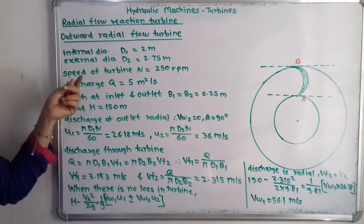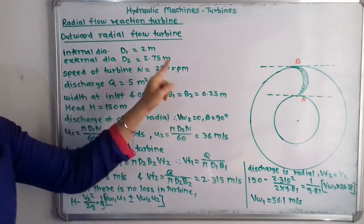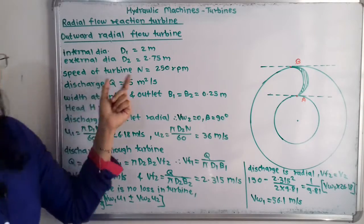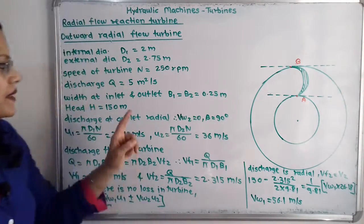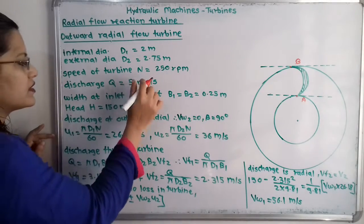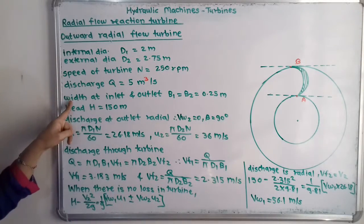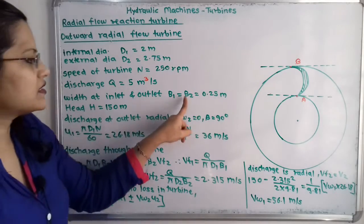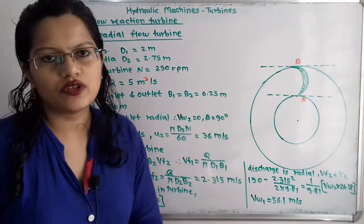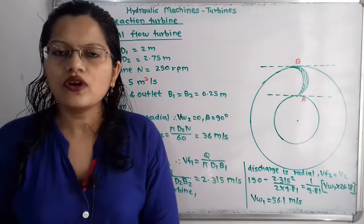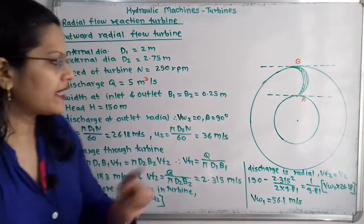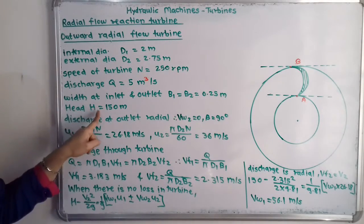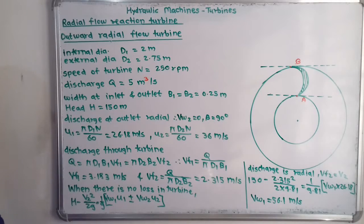Speed of the turbine N is given as 250 rpm, and the discharge Q is also given as 5 meter cube per second. The width at inlet and outlet B1 = B2 = 0.25 meter. The head H = 150 meter.